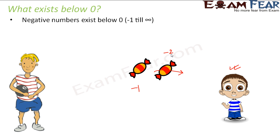So basically, what we realized is there are negative numbers which exist below zero. These negative numbers are just like the positive numbers with a negative sign: minus 1, minus 2, minus 3, minus 4, and so on till infinity on the negative side.